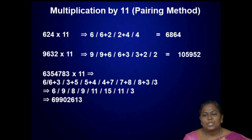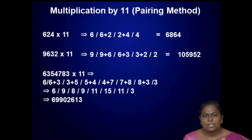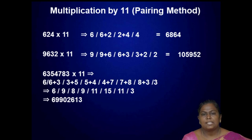Next, multiplication by 11. This method is also called the pairing method. For given number 624, pair the digits: take 6, then 6 plus 2 gives 8, then 2 plus 4 gives 6, and last digit 4. So 624 into 11 is equal to 6864.